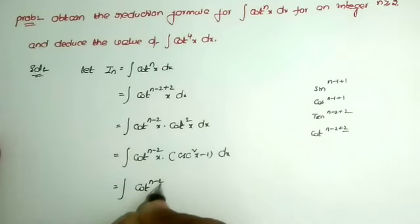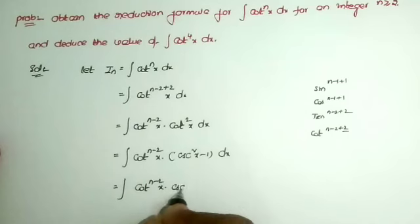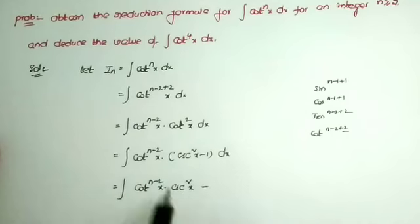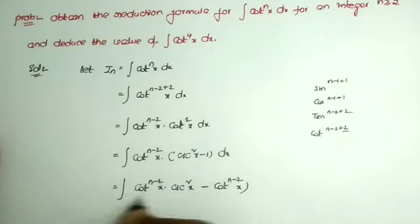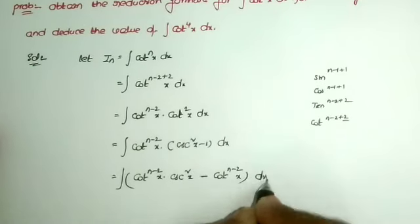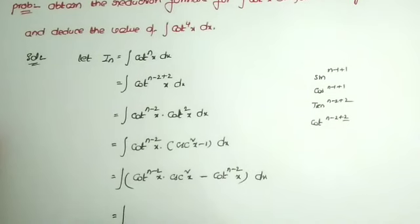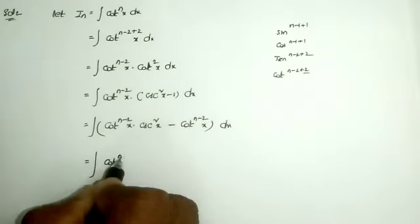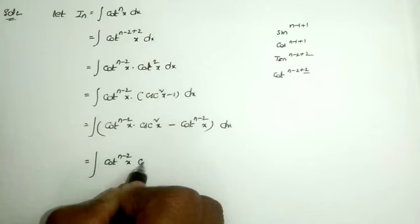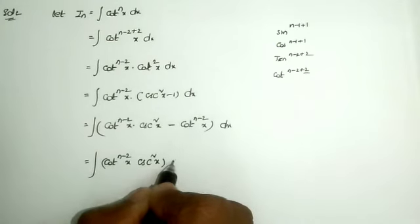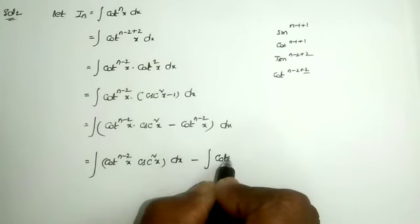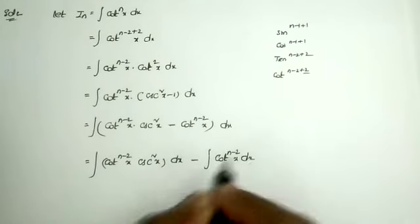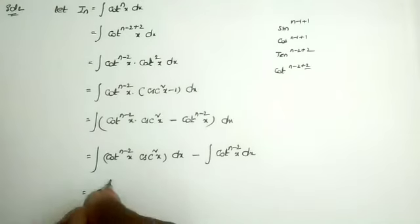The first value is cot^(n-2) x times cosec² x minus cot^(n-2) x times 1, that is cot^(n-2) x. Separating the integration, this equals the integral of cot^(n-2) x times cosec² x dx, minus the integral of cot^(n-2) x dx.